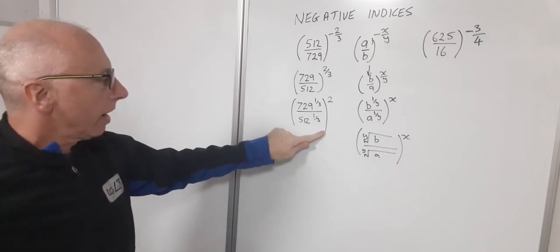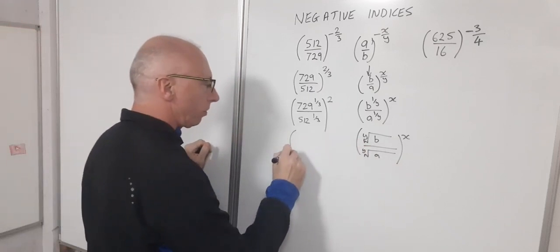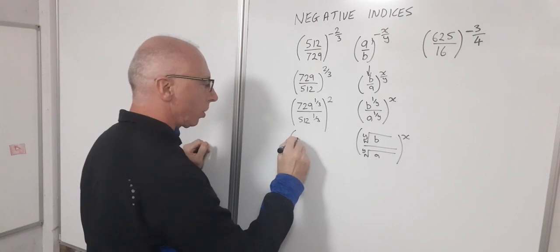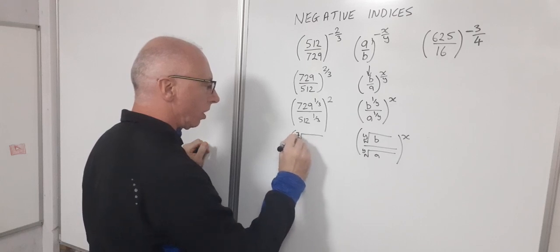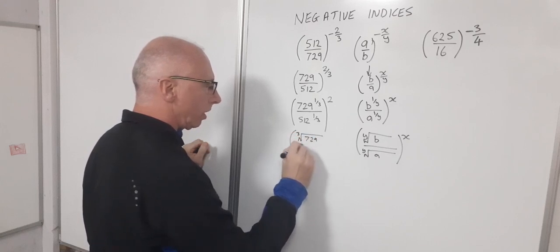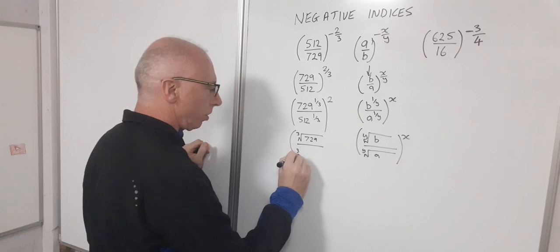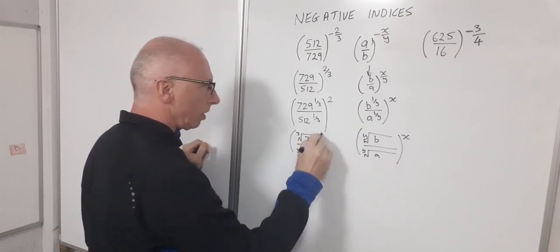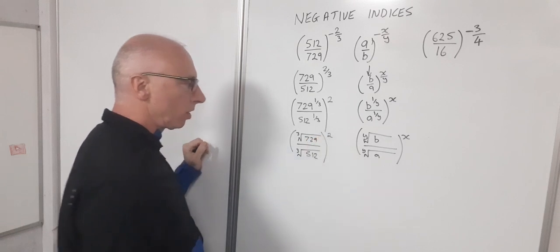Okay now using this part, we've now got the third root which is the cube root of 729 divided by the cube root of 512, and then what we can do is then just square that result.